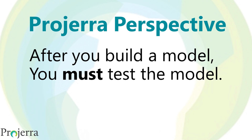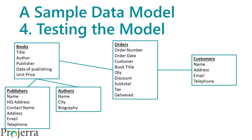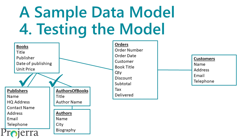Now let's return to our practical example of constructing a data model, because after you build a model, you must test that model. Let's take a look at each one of those relationships. One book has one publisher; one publisher has many books — that relationship's okay. One book can have many authors; one author can write many books. As modeled, that relationship is not so good. We need to create an intermediate entity to help us model that many-to-many relationship.